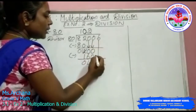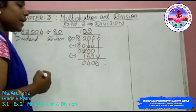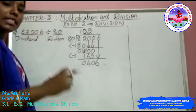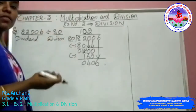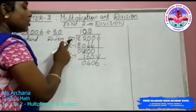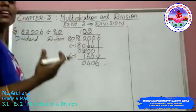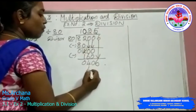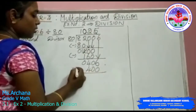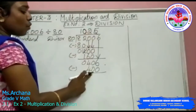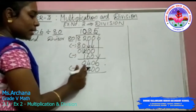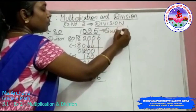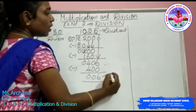Now I have one more digit in the dividend, so I am bringing that digit — 6 — down. The value has now become 406. So now I should check how many times I will get 406 in the 80 table, or a value below 406. I check in the 8 table: 8 fives are 40, so 80 into 5 gives 400. Now I do subtraction: 406 minus 400 gives 6 as a remainder. This value at the top is called the quotient, and this 6 is called the remainder.